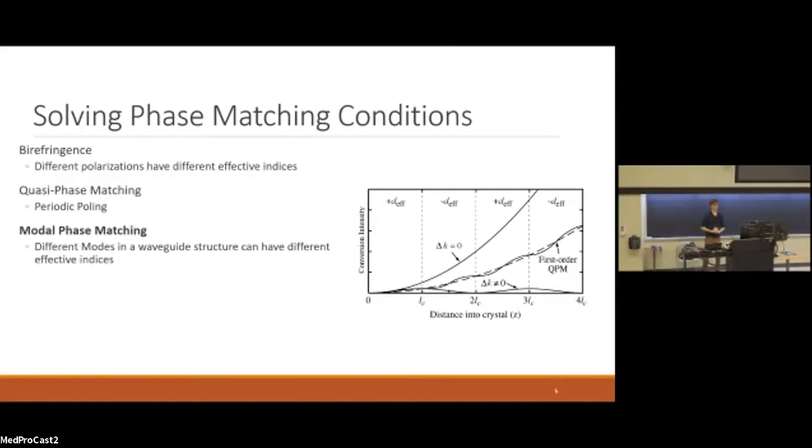You'll need to basically engineer your phase matching to do something. So how do we resolve this? So the most common way is probably birefringence. Different polarizations will have different indices, effective indices in the medium. There's also periodic polling where we see the quasi phase matching curve. And then we have something called modal phase matching. So modal phase matching, if you have a wave guide, then you can get different modes within that wave guide to have different indices. You can engineer those modes to basically target specific wavelengths.